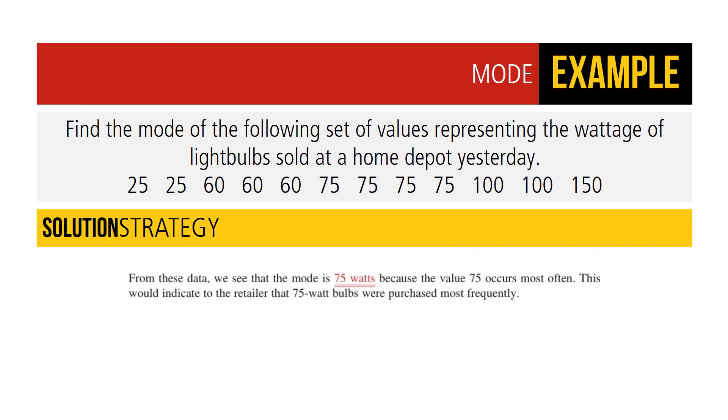One common business application of mode is in merchandising, where it's used to keep track of most frequently purchased goods. The following is a great example, where we find the mode of a set of values representing the wattage of light bulbs sold at Home Depot. The solution strategy here is quite simple. From the data we see above, we see that the mode is 75 watts because the value 75 occurs most often. This indicates to the retailer that 75-watt bulbs are purchased most frequently.